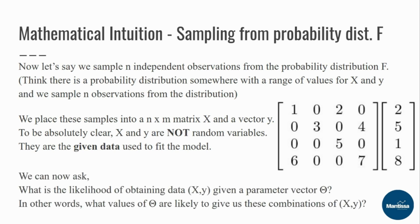Now, since we want to find theta, we can ask: what is the likelihood of obtaining data (x, y) given a parameter vector theta? This is essentially reversing the problem — instead of asking what x and y a given theta produces, we ask what values of theta are likely to give us these combinations of x and y. We are framing the problem this way so that we can find theta.